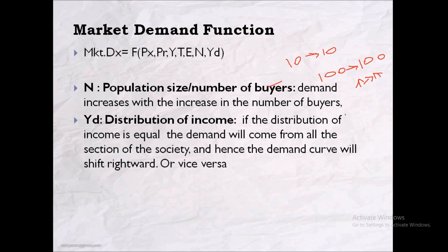Now let us understand distribution of income. If income distribution is equal, demand will come from all sections of society. However, if there is unequal distribution, there will be no increase in demand.